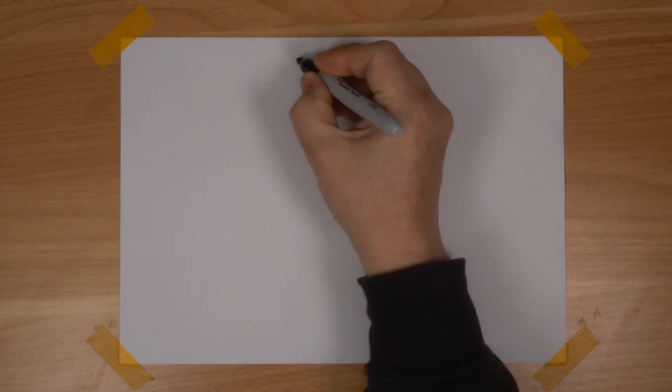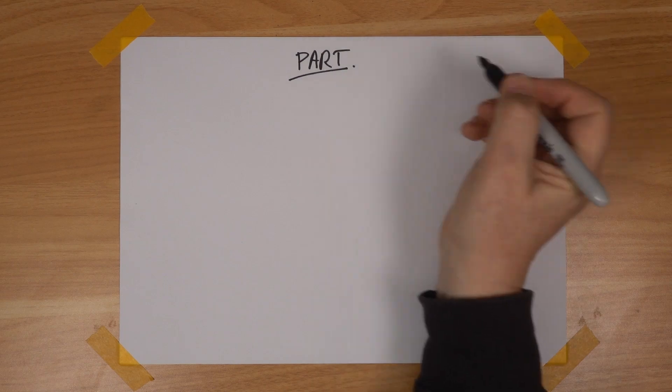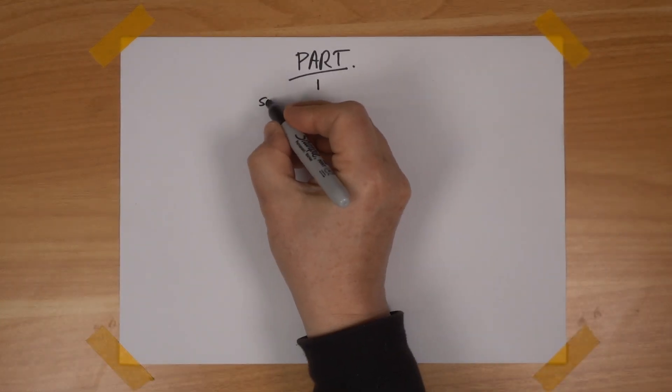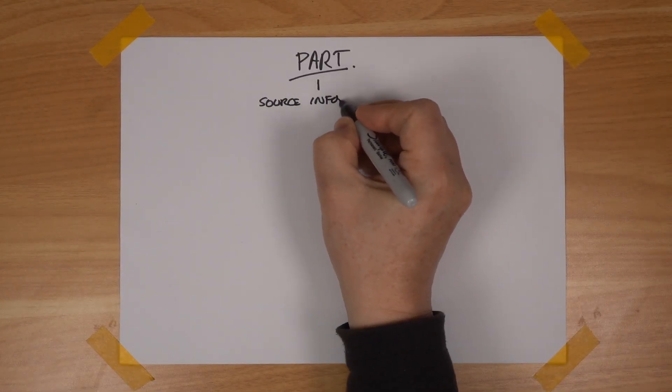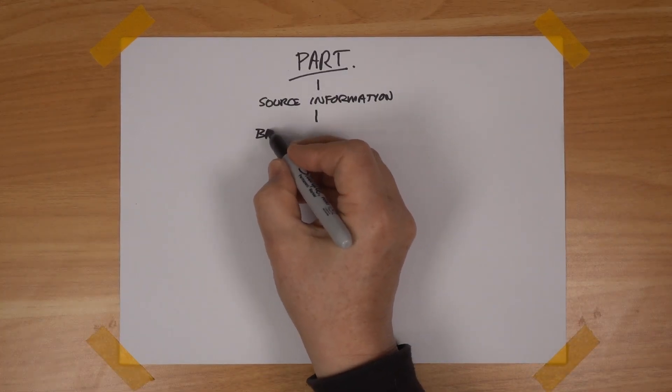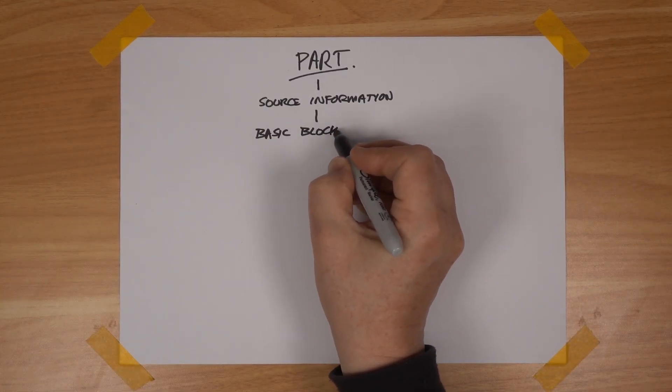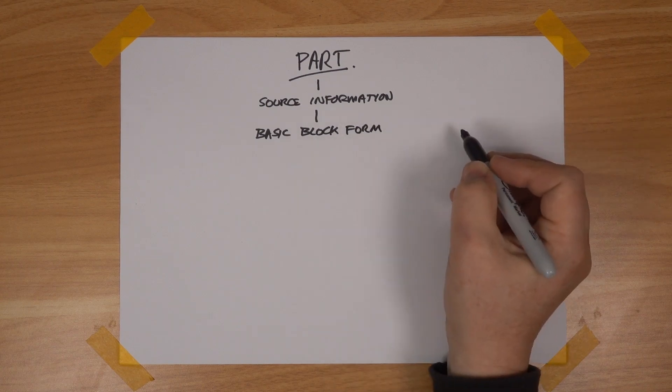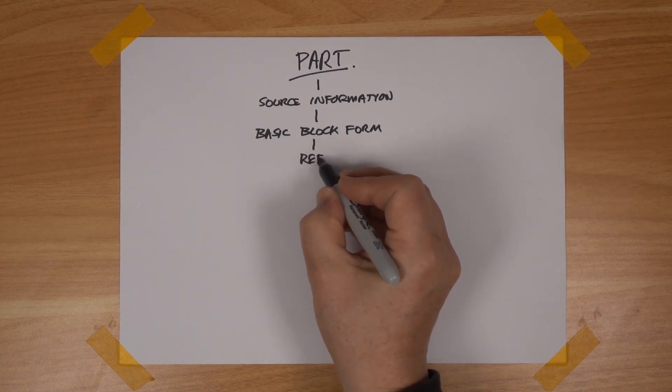The most important stage is getting the source information. For Milano this is a big problem. There's a definite lack of information out there for Milano which is what makes the build so slow. I start by creating basic block shapes for the parts to get an idea of size, proportion, fit, and orientation. When I'm happy I then refine the part.